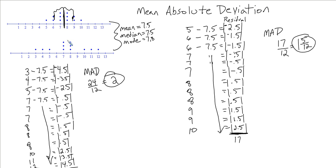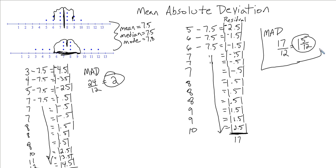So that means from our mean, which was 7.5, we went on average 2 to the left and 2 to the right. On average, our spread was 2 away from the mean, whereas on the previous set of data our average was a little less than 1.5 away from the mean. The MAD gives us a description of the data that our measures of central tendency did not. Our MAD is telling us how close the data is to the mean overall.